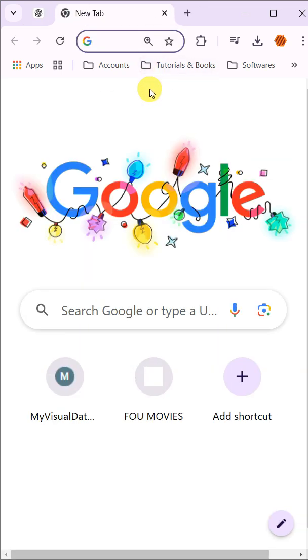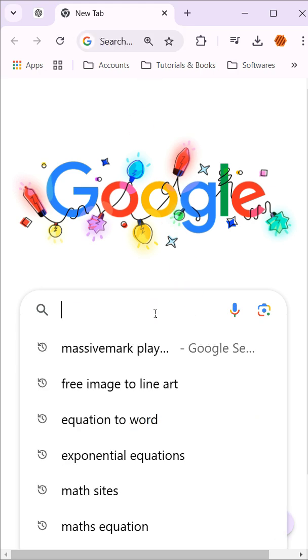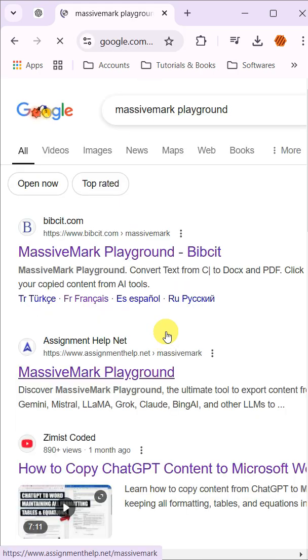First, open a new tab in your browser and search for Massive Mark Playground. From the results, select the first link, which is usually from bibsit.com. This will bring you to the user interface of the tool.